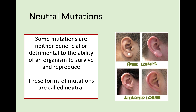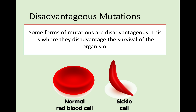There are other mutations called neutral, where they are neither beneficial nor detrimental to the ability of the organism to survive. For example, your earlobes — you can either have free earlobes or attached earlobes. That's a mutation, but it doesn't really affect your survival chances. The third type is disadvantageous, where mutations disadvantage the survival of the organism. An example is sickle cell disease, where red blood cells are shaped differently and can't gather the same amount of oxygen — that's a disadvantage for survival.